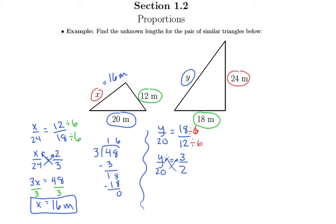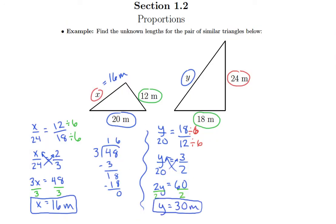Take our cross product. 2y equals 3 times 20 is 60. And then finally, we can divide both sides by 2. And 60 divided by 2 is, of course, 30. So y is equal to 30 meters.